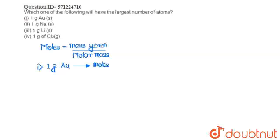moles will be mass given, that is 1 gram, divided by the molar mass of gold, that is 197.